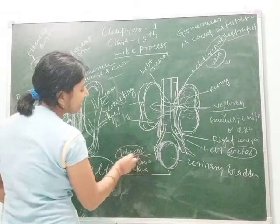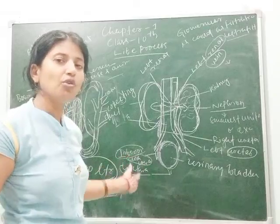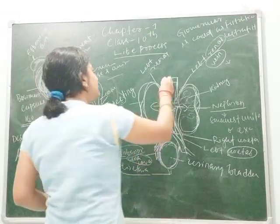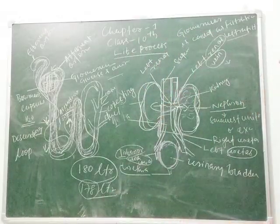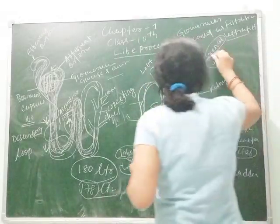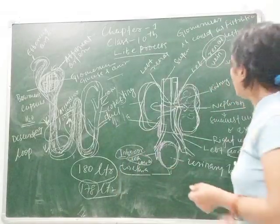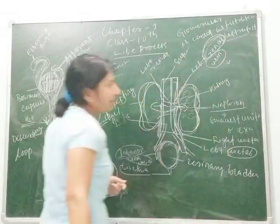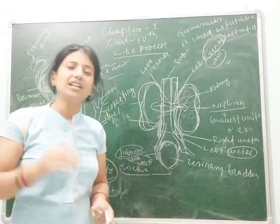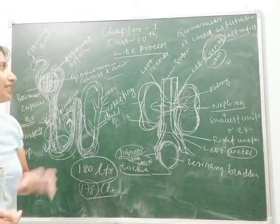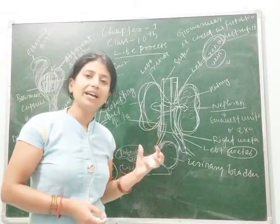The inferior vena cava brings unfiltered blood from the lower part of the body, and the superior vena cava brings unfiltered blood from the upper part of the body. In biology, the kidney is referred to as 'renal' — arteries connecting to the kidney are called renal arteries, and veins connecting to the kidney are called renal veins.